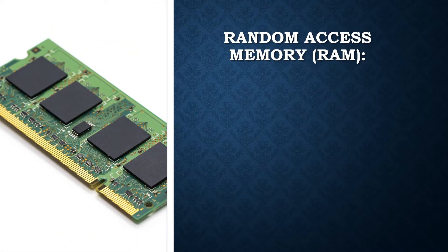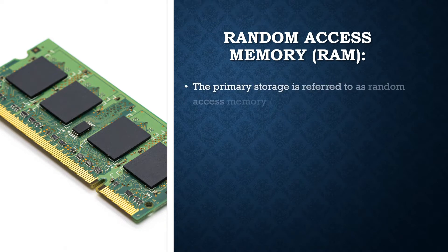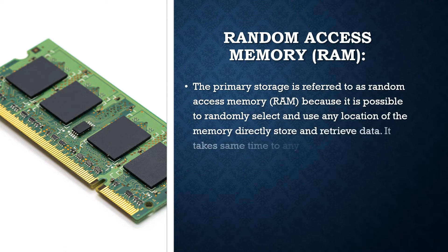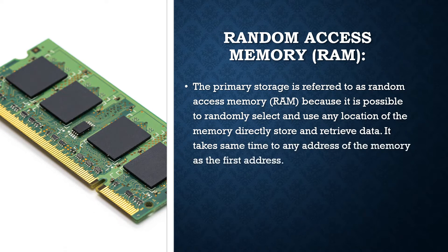The first is Random Access Memory or RAM. The primary storage is referred to as random access memory because it is possible to randomly select and use any location of the memory, directly store and retrieve data. It takes the same time to access any address of the memory as the first address.